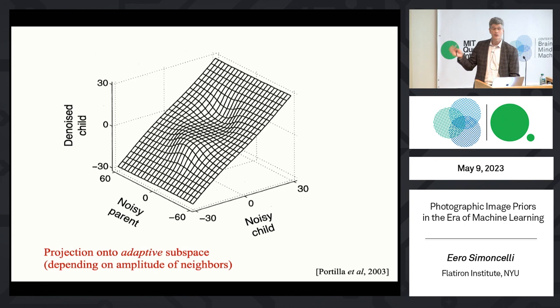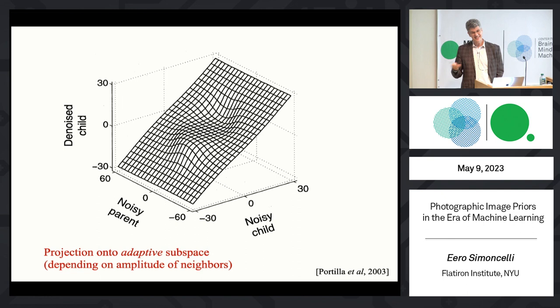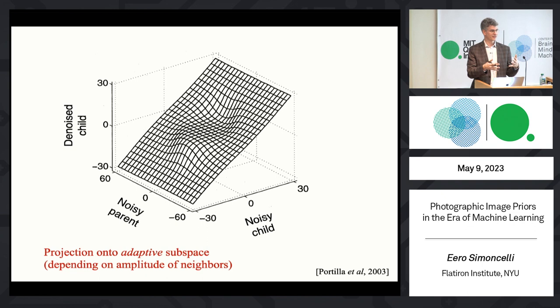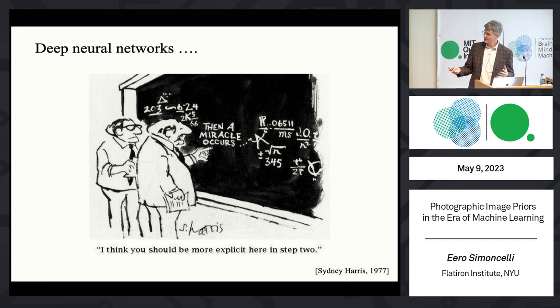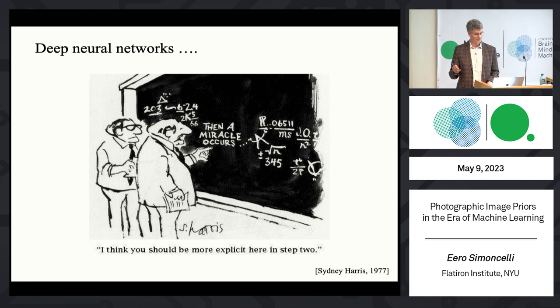The point of all of this is that we had a long history of building methodologies for denoising based on priors, and in the end they all come down to projections onto subspaces — taking the data and smashing it onto some surface where the signal is most likely to live. Now along come the deep nets. And they change everything. We still don't know how they work — not really. But it's inescapable.